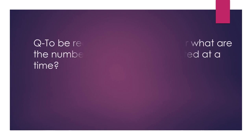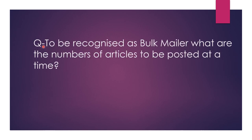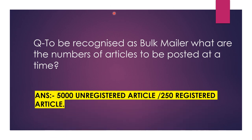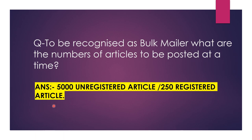Next question. To be recognized as a bulk mailer, what is the number of articles to be posted at a time? The answer is 5,000 unregistered articles and 250 registered articles.